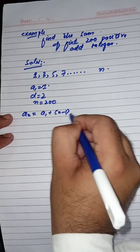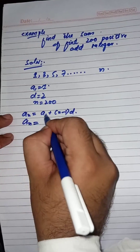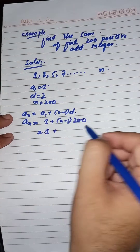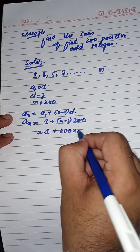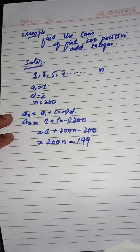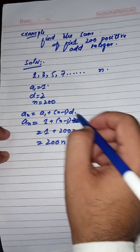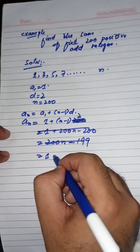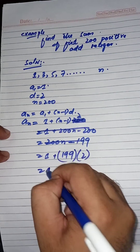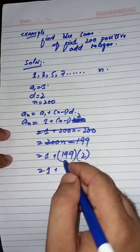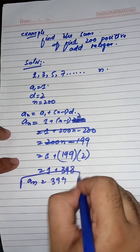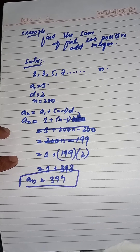The nth term is equal to a1 plus (n minus 1) into d. So an = 1 plus (n minus 1) times 2. The common difference is 2 and n is 200, so an = 1 plus (199 times 2) = 1 plus 398 = 399. So the nth term an is equal to 399.